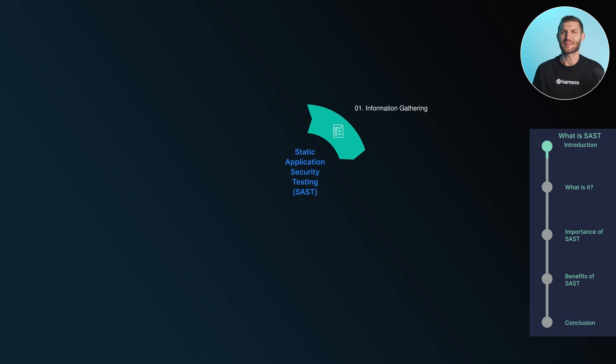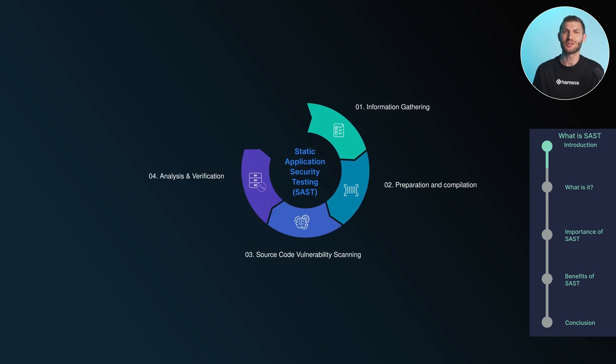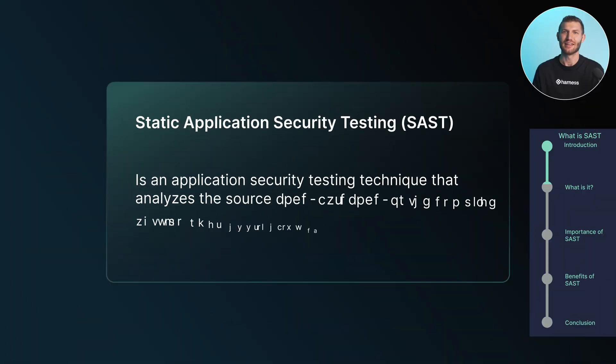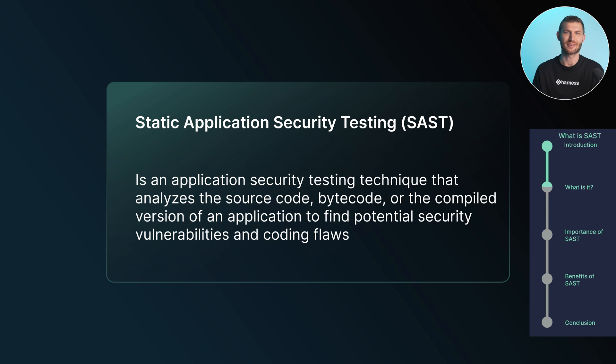Today, we're diving into Static Application Security Testing, or SAST. We'll explore how SAST analyzes source code for security flaws without execution and identifies software vulnerabilities early in the development lifecycle. Static Application Security Testing is an application security testing technique that analyzes the source code, byte code, or the compiled version of an application to find potential security vulnerabilities and coding flaws. Unlike dynamic testing, which involves running the application and observing its behavior, SAST examines the code itself without executing it.